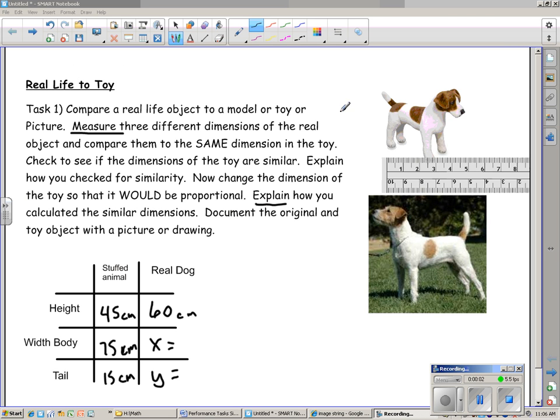Performance task number one: you need to come up with a real-life object, like a dog, a stuffed animal, a Barbie doll, or a matchbox car. You're going to compare something real to a toy, a model, or something smaller of it.